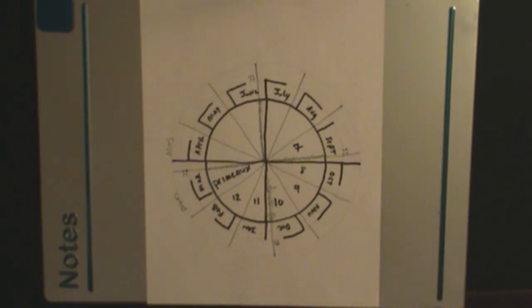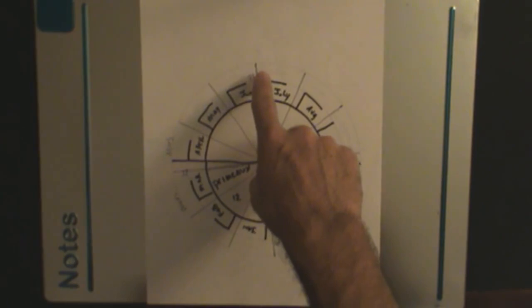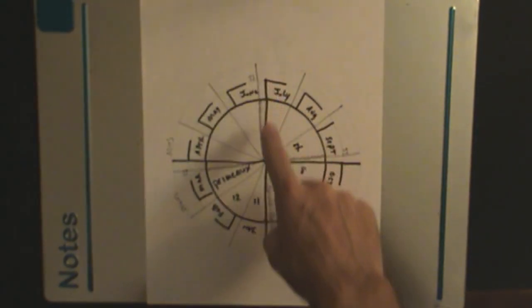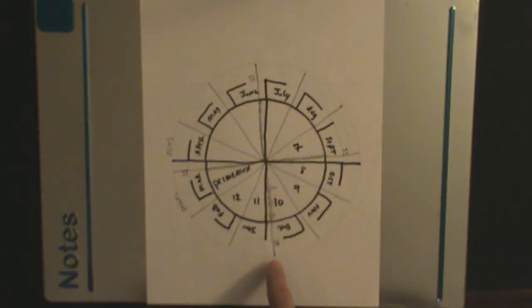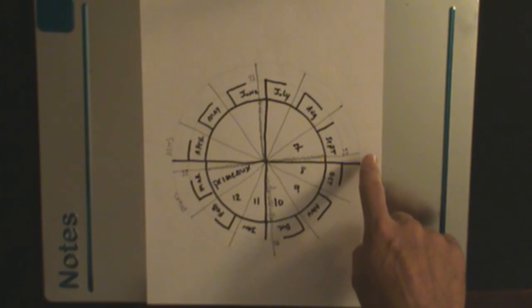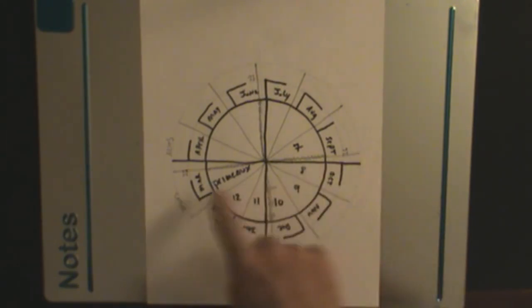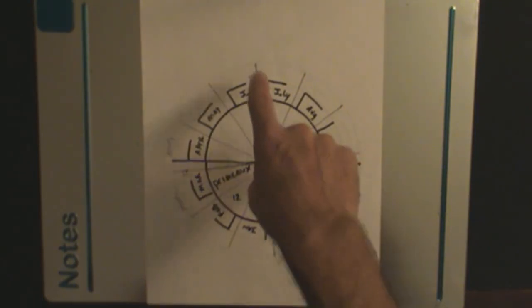But first we'll go over just the equinoxes and solstices. June 21st is the summer solstice, and December 21st is the winter solstice. The 21st of March and the 21st of September are the equinox. Equinox means equal night, so on these days there's 12 hours of light and 12 hours of darkness.